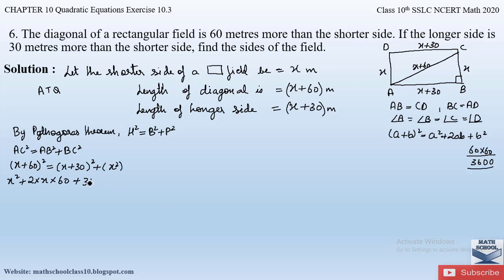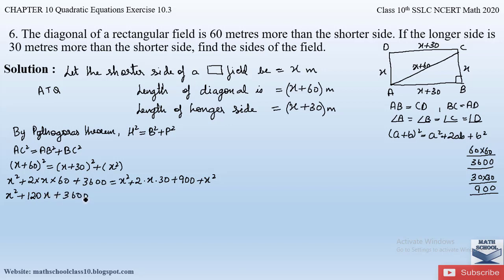For the right side, applying the same formula to (x + 30)²: x² + 2·x·30 + 30². Now 30² = 900. So the equation becomes: x² + 120x + 3600 = x² + 60x + 900 + x².